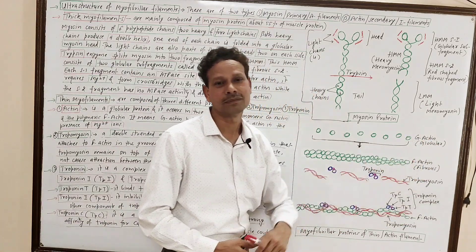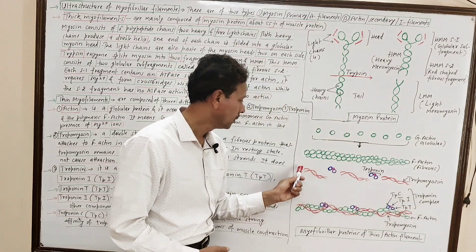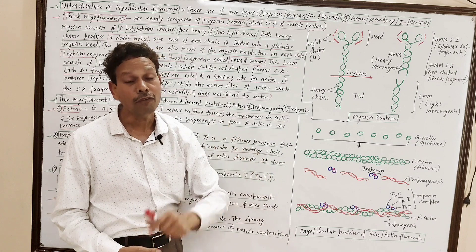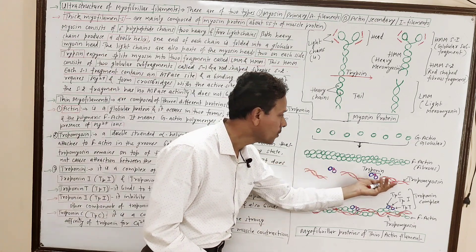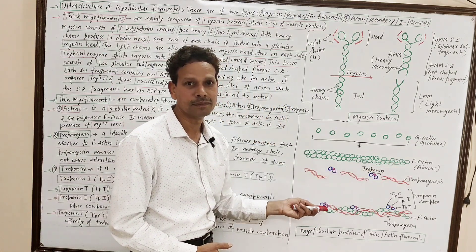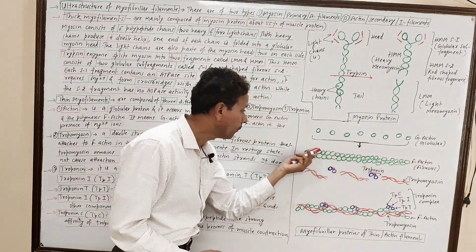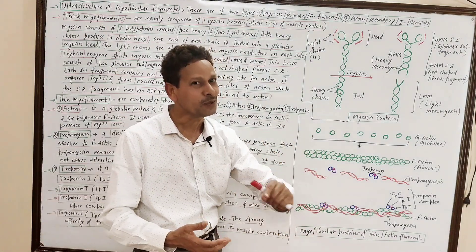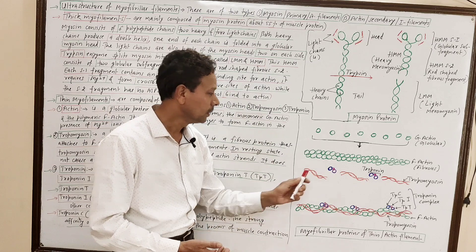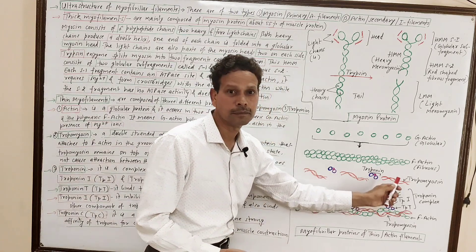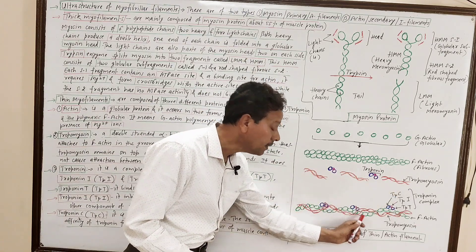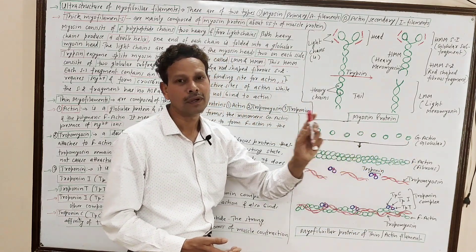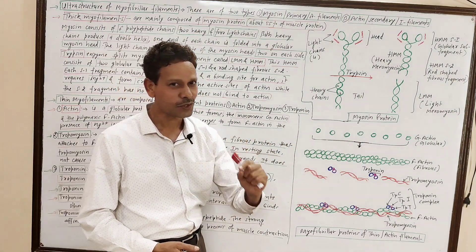Tropomyosin is a double-stranded alpha-helix. These tropomyosin proteins remain on the top of F-actin during muscle relaxation. But note down: at the time of muscle contraction, these tropomyosin enter into the active grooves of F-actin.